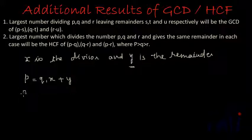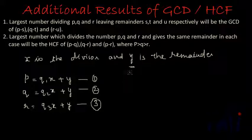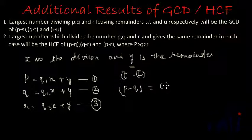When X divides Q, Q2 times, again it leaves remainder Y. In all three cases the remainder is the same — X is the largest number we are talking about. Let's call the three equations equation 1, equation 2, and equation 3. When we do equation 1 minus equation 2, assuming P is greater than Q, on the left side we get P minus Q, and on the right side Q1 minus Q2 multiplied by x, plus y minus y which cancels. So the remainder terms cancel each other.